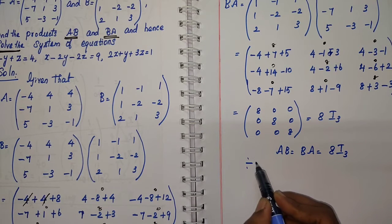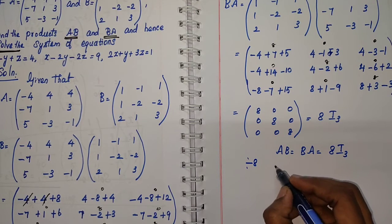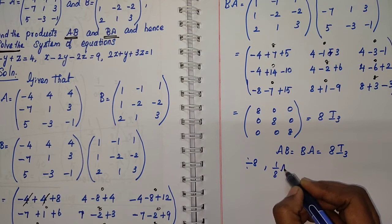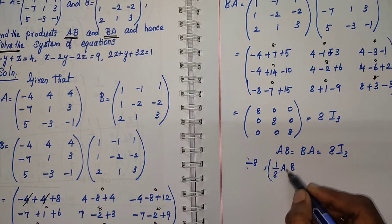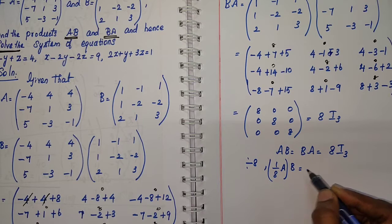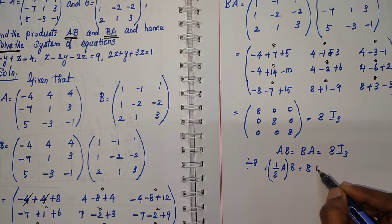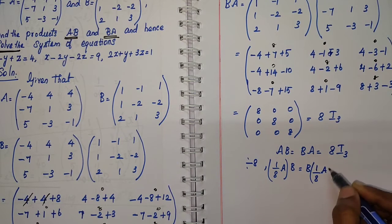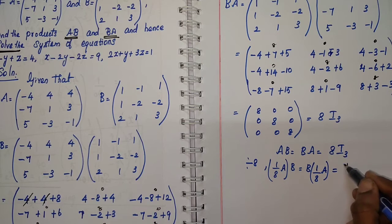Since AB equals 8I₃, dividing both sides by 8 we get (1/8)B times A equals I₃, which means B inverse equals (1/8)A. So B⁻¹ equals (1/8)A.